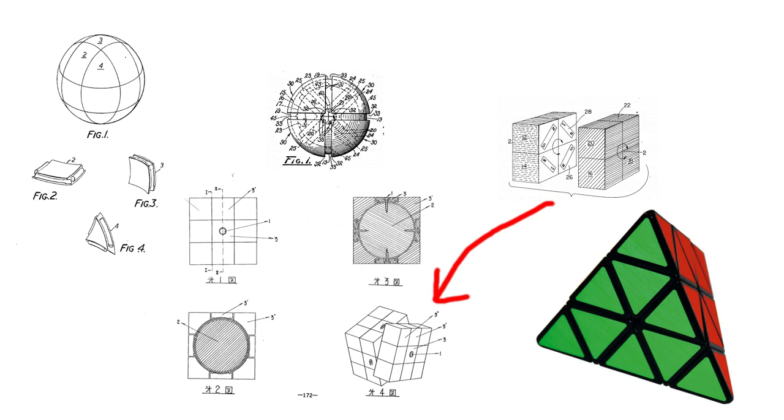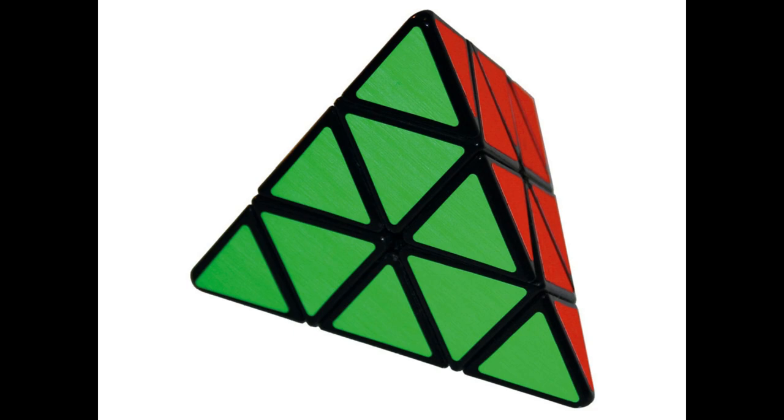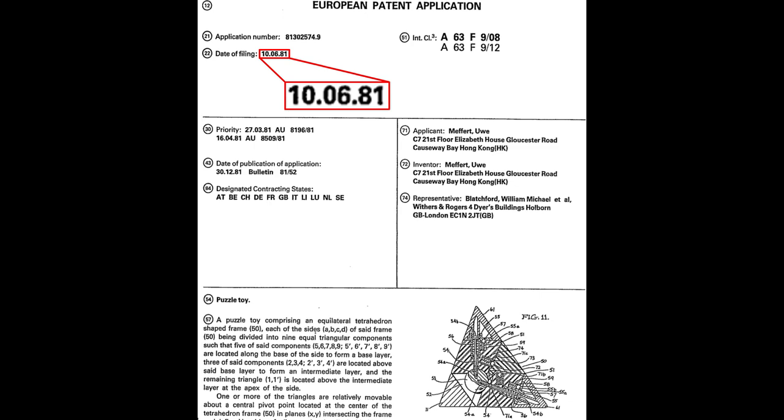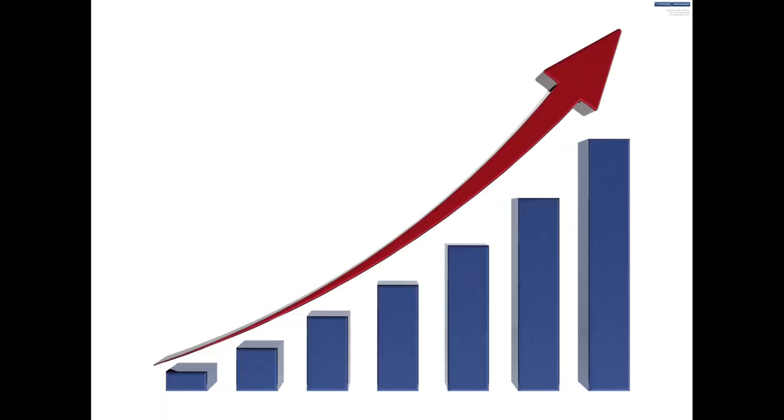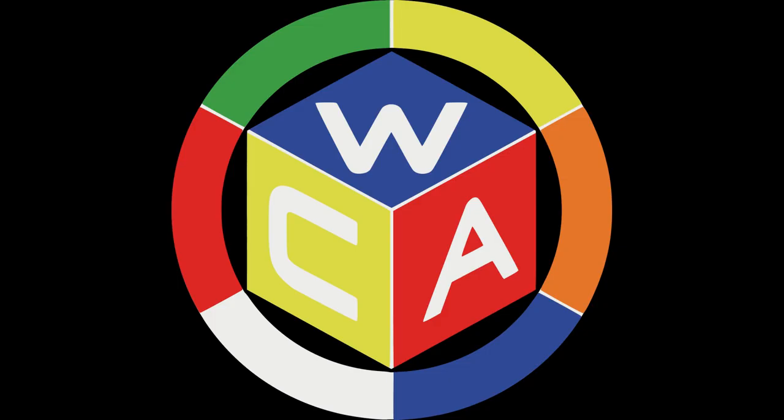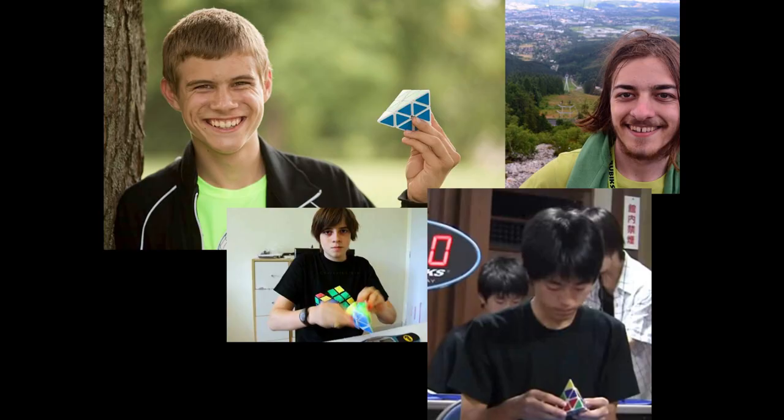Easily the most famous one is the Pyramix. Invented in 1971 by Uwe Meffert, the Pyramix wasn't patented until ten years later, after he saw how popular the Rubik's Cube was. While it was never as popular as the Cube, it was still wildly successful, with 90 million allegedly being sold in the three years after it was introduced. So much so that the puzzle has been an official WCA event since its inception, and there are many people dedicated to it.